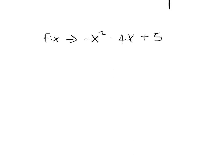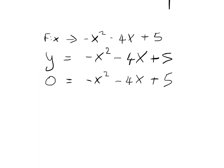This is how we actually solve this problem. The first thing you should always do is change the function, written like f(x), into an equation. As you know, f(x) is always equal to y. So I'm going to change this to y equals minus x squared minus 4x plus 5. Now we have an equation, and we also know that for those two particular points we're looking for, y is equal to 0. So what we can do is substitute 0 in for y, and we end up with something that looks like a quadratic equation.